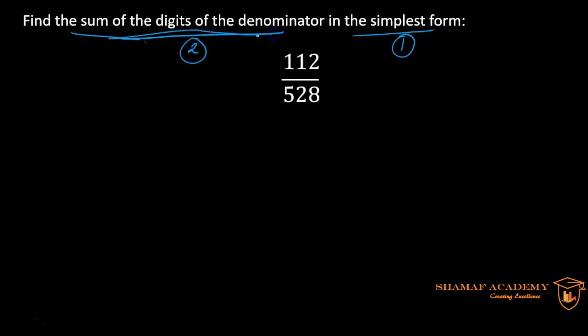All right, let's first do the simplification. Step one is simplify 112 over 528. Now when it comes to simplification of fractions, you have to observe both numbers—the numerator and the denominator—and think: do they have a common factor? Factor means do they have a number, a table in which both of them can go. I have a hint here: they both end with even numbers, so they are definitely going to go with two, right? So let me divide this by two. They can be further simplified, but let me just divide by two for starters.